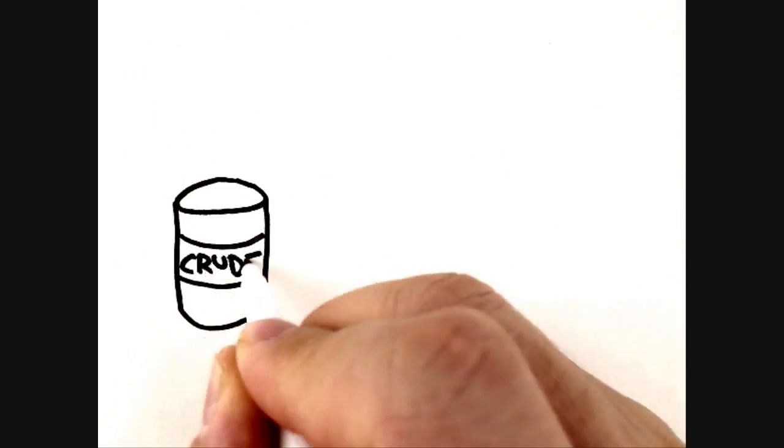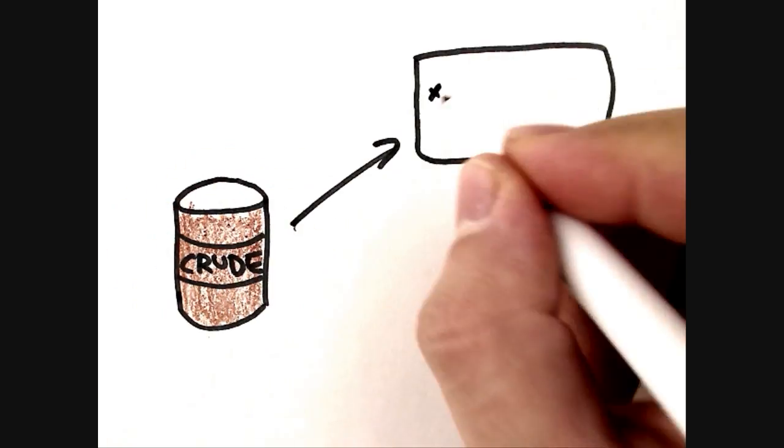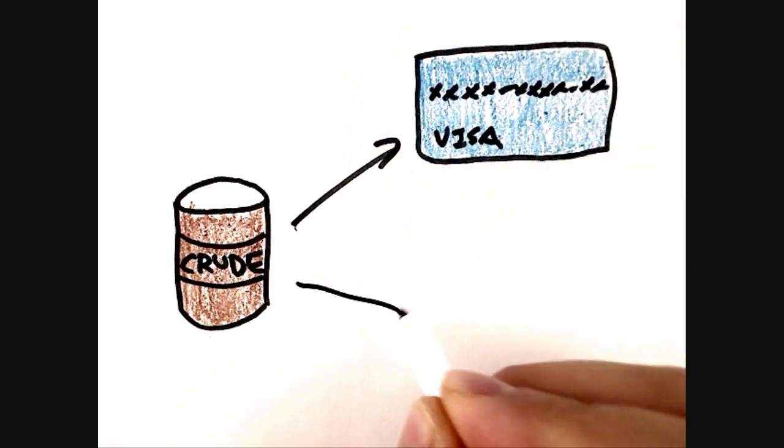That's right! Almost everything you use, from the credit card inside your wallet to the balloon at your birthday party, are made from substances derived from crude oil.